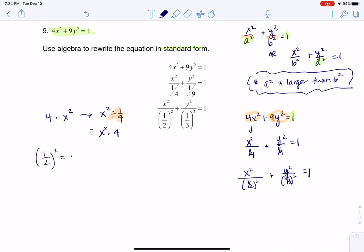Because if you take 1 half squared, that is 1 half times 1 half, multiply the numerators, multiply the denominators, you do get back to 1 fourth. The same can be said for 1 third squared. It's 1 third times 1 third, which is equal to 1 ninth.